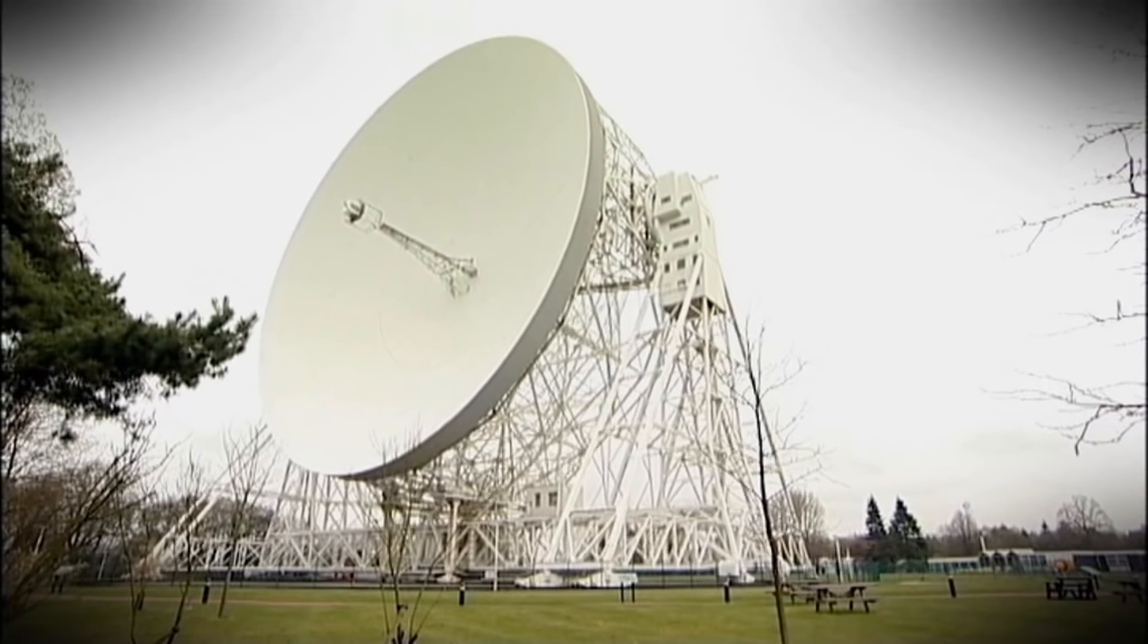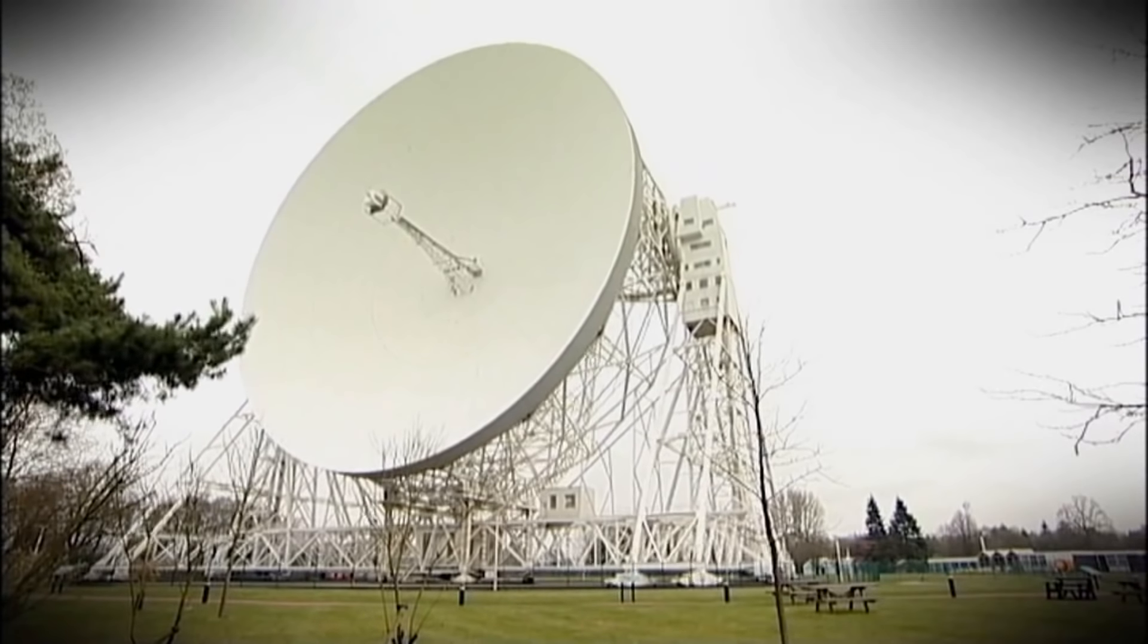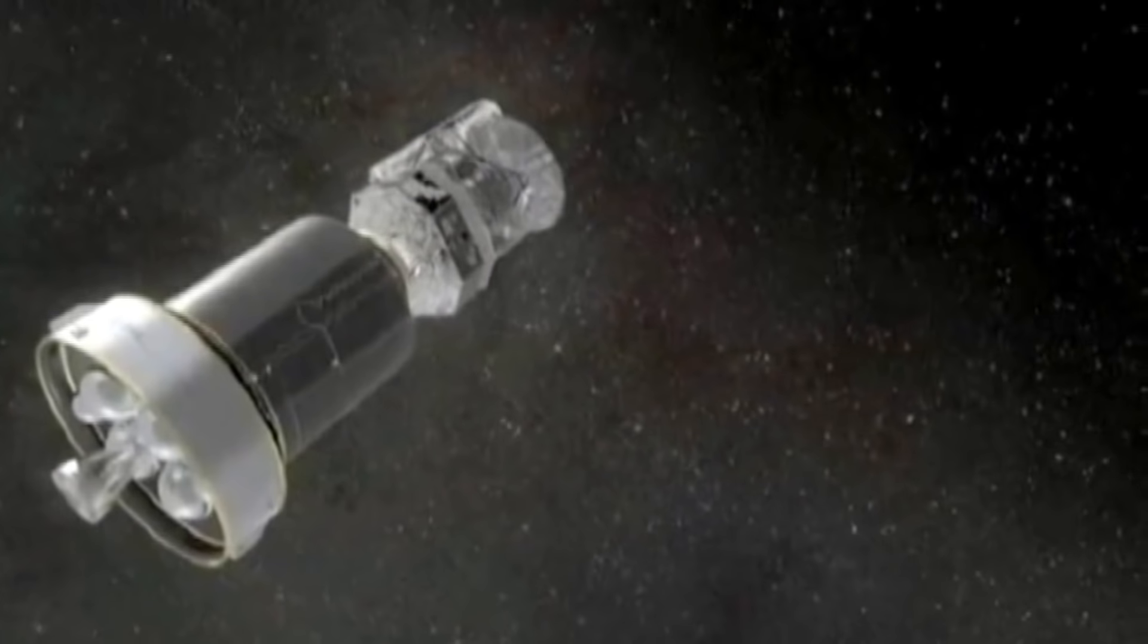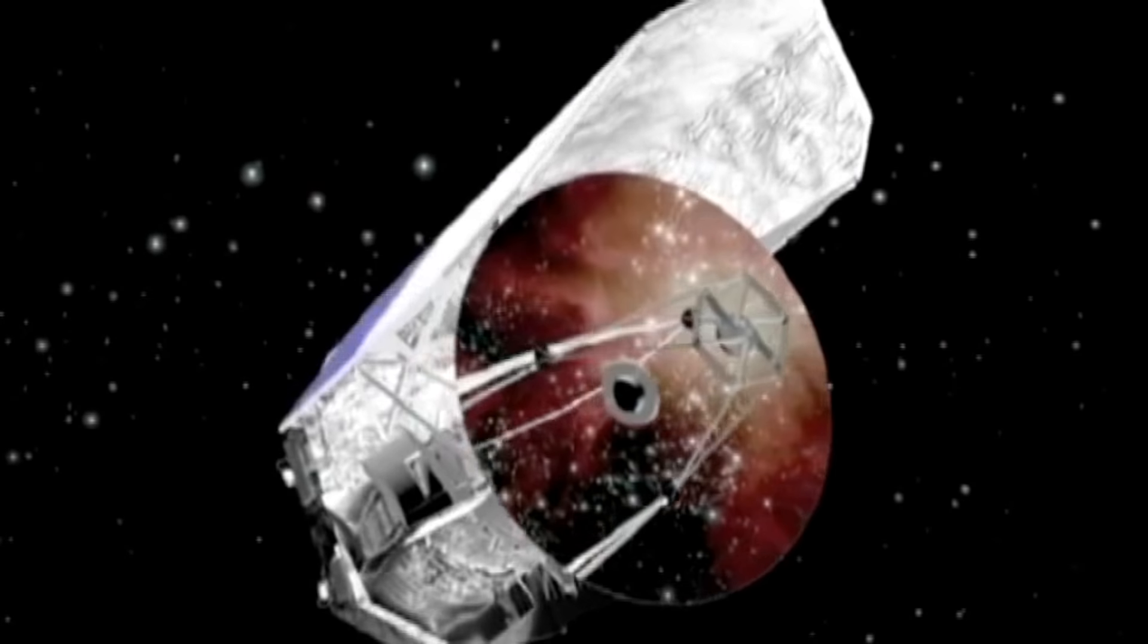Telescopes like Jodrell Bank's giant 76 meter Lovell radio telescope. An ESA's Herschel space telescope which can see the sky in infrared. When we look at things in infrared light we can get extra information on top of what we can see when using visible light.